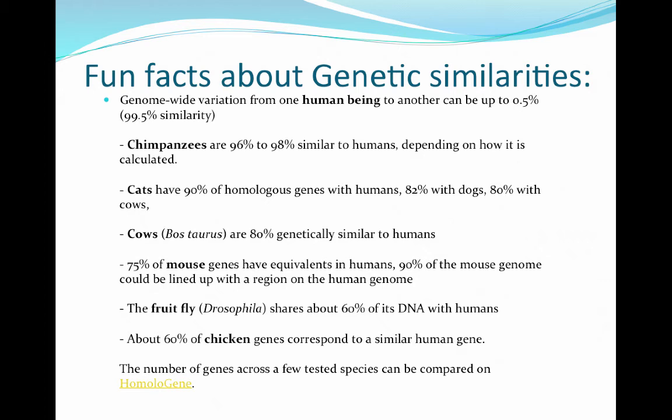Here are just a few facts about genetics. One of the most interesting, especially as an animal scientist, is that cows are actually 80% genetically similar to humans. That means the cow genome is 80% similar to the human genome — they have a lot of the same genes that are going to be expressed. The reason they're expressed may be different, but the actual DNA that is there is very, very close to humans.